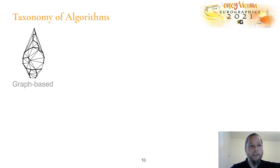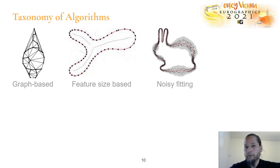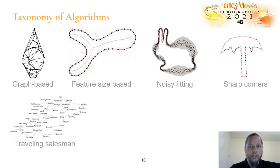The first category is graph-based: we take a graph, for example the Delaunay graph, and filter some edges to reconstruct the polygon. Other algorithms are based on feature size, so they can reconstruct different sizes of features. Some can fit noisy point sets. We can also reconstruct sharp corners. There is the traveling salesman problem, which is closely related to curve reconstruction, as you will see.